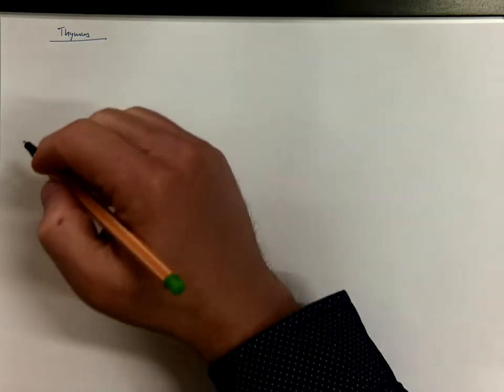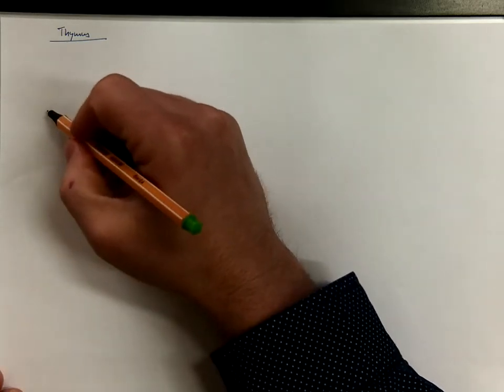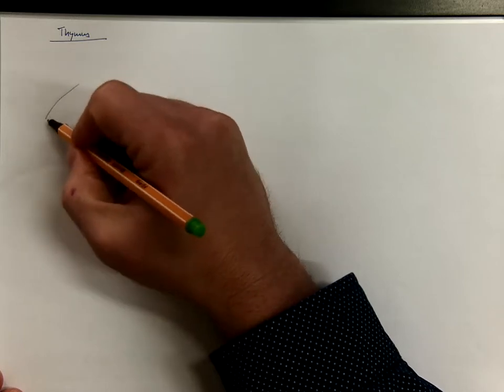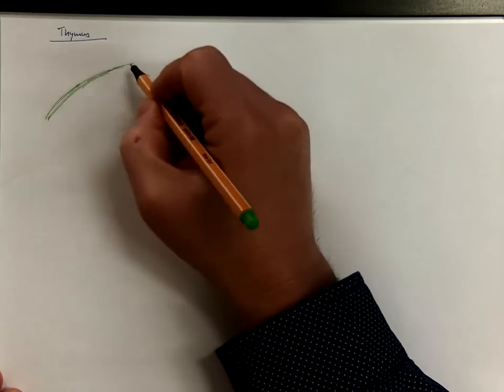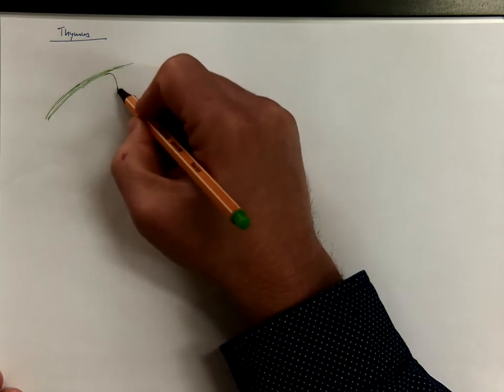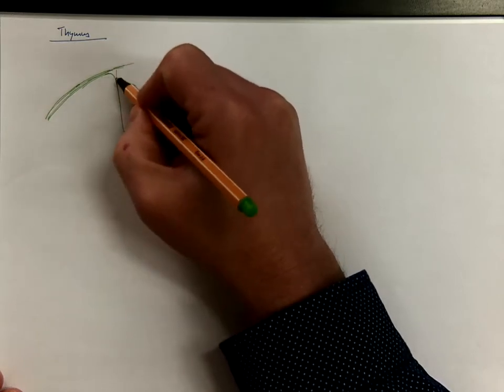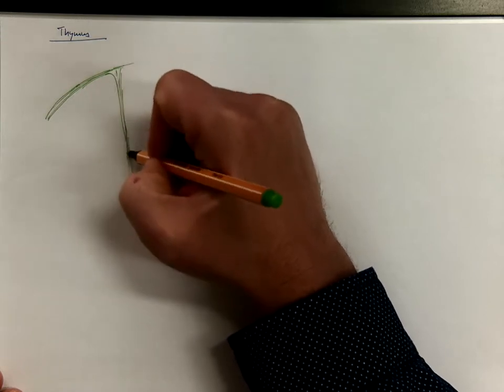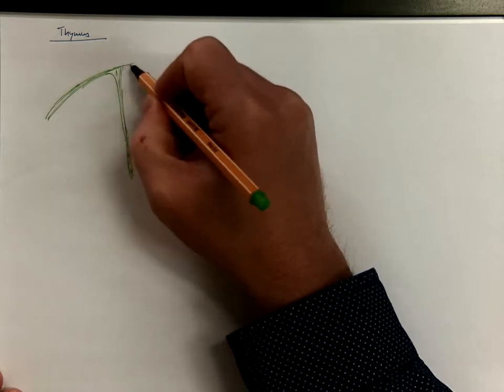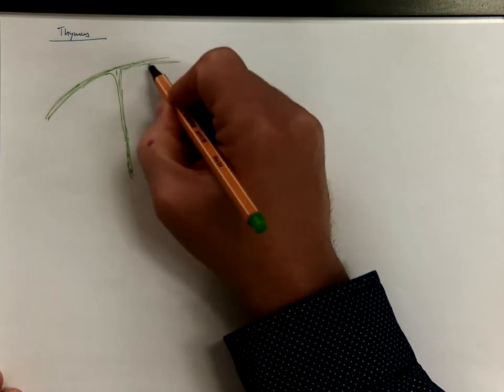Let's make a scheme of thymus that will hopefully help us to understand the real slides. The surface of thymus is covered by a fibrous capsule from which connective tissue septa radiate into the deeper tissue, subdividing it into pseudolobules.